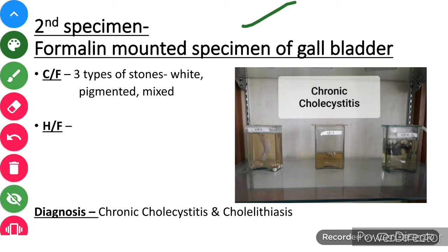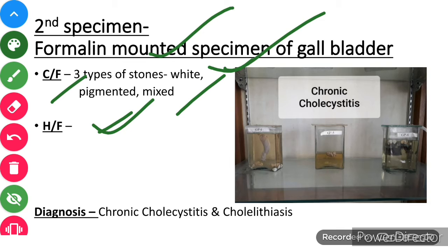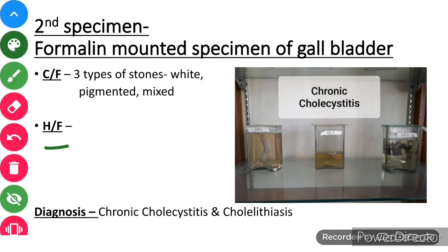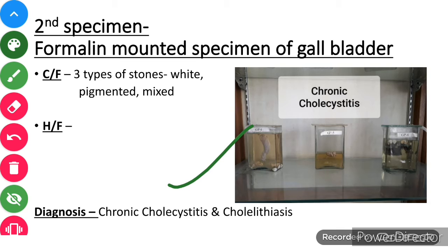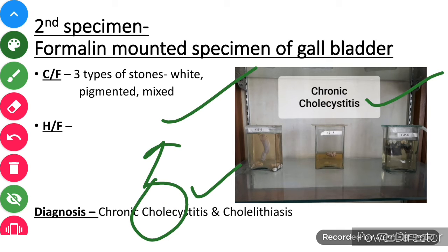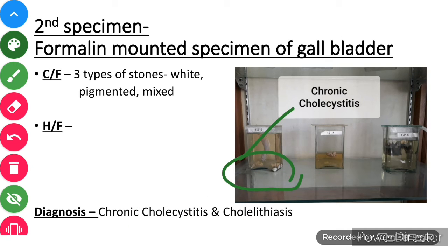The second specimen is the formalin-mounted specimen of gallbladder. The gallbladder is the easiest to understand because there are many stones visible. We divide these stones into three types based on their color: white (cholesterol stones), pigmented (bile pigment stones), and mixed. For histological features, lymphocytes and plasma cells are increased — as mentioned, when lymphocytes and plasma cells dominate, it indicates chronic infection. The final diagnosis is chronic cholecystitis and cholelithiasis. Cholecystitis means chronic inflammation of the gallbladder ('chole' = gallbladder, 'itis' = inflammation), and cholelithiasis means stone formation.